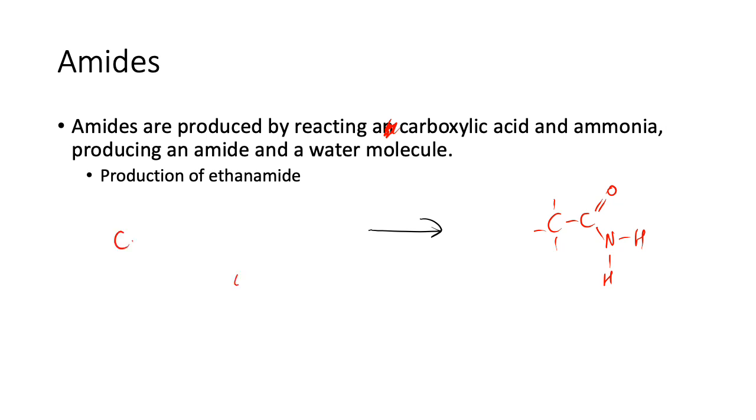So the carboxylic acid provides the carbon chain. Okay, so here's your carboxylic acid, ethanoic acid, and you're going to add ammonia to it.